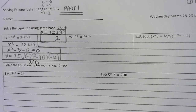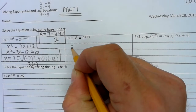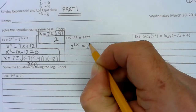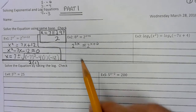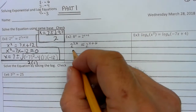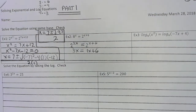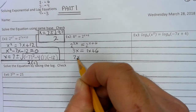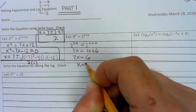Now let's take a look at Example 2. In order to have the same bases, we need to convert to 8 so that we have 2 to the power. We know 2 to the power of 3 is 8, so then that's 3x equals 2x plus 6. The bases are now the same, so the exponents are equal: 3x equals 1x plus 6. We subtract 1x from both sides, giving 2x equals 6, and divide both sides by 2, so x equals 3.